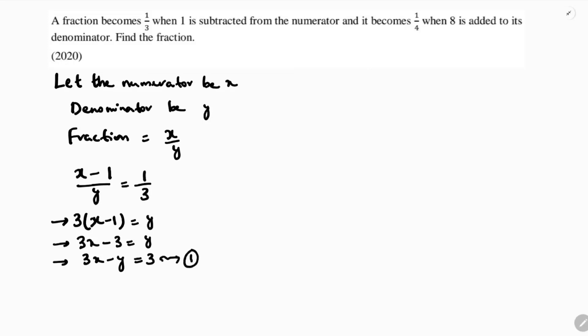Next, another condition is it becomes 1 by 4 when 8 is added to its denominator. x by y plus 8 becomes 1 by 4. So if we cross multiply, 4x equals y plus 8. So 4x minus y equals 8. This is equation 2.